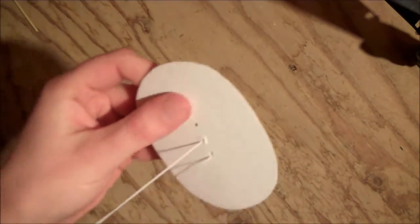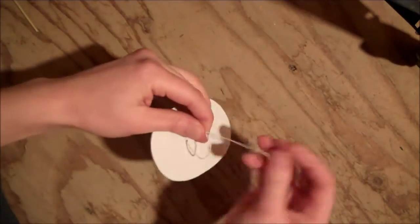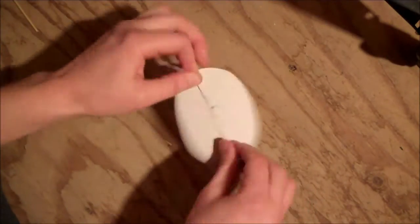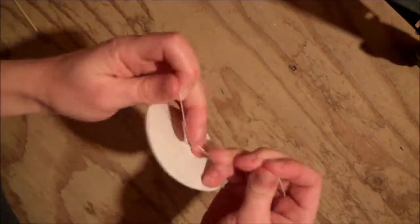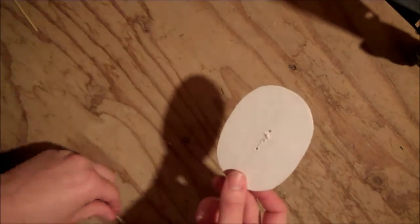Then take a needle and thread and just sew the pin back right to the piece of cardboard to give it more stability so that it'll stay together when you want to open it up and wear it. Then just tie off your thread and clip off the excess threads. This will be hidden so you don't have to worry about it.